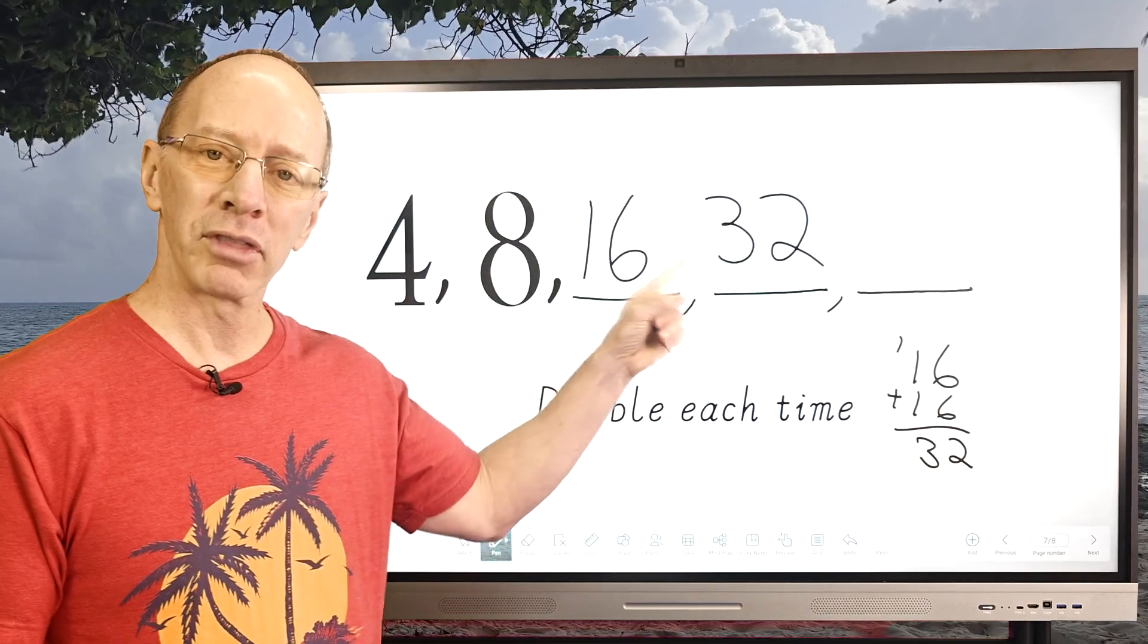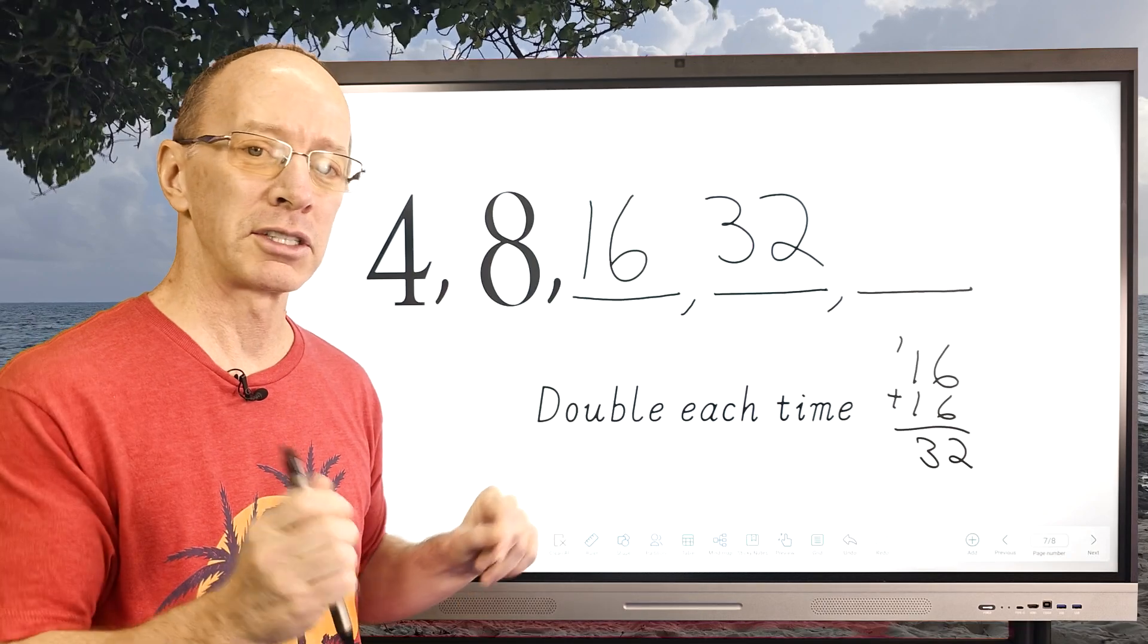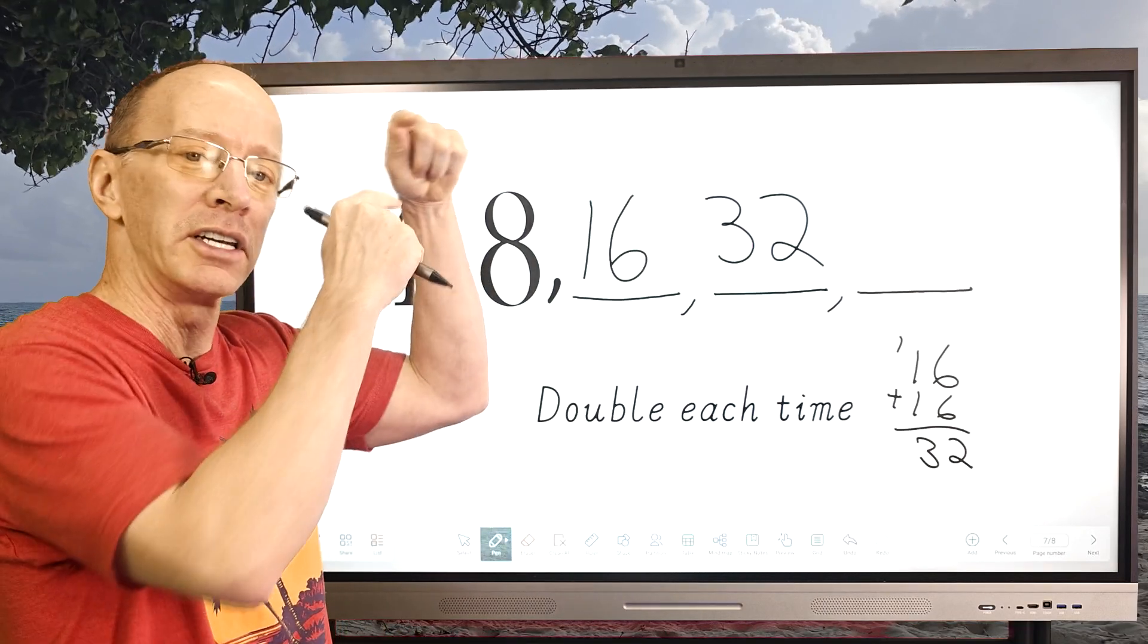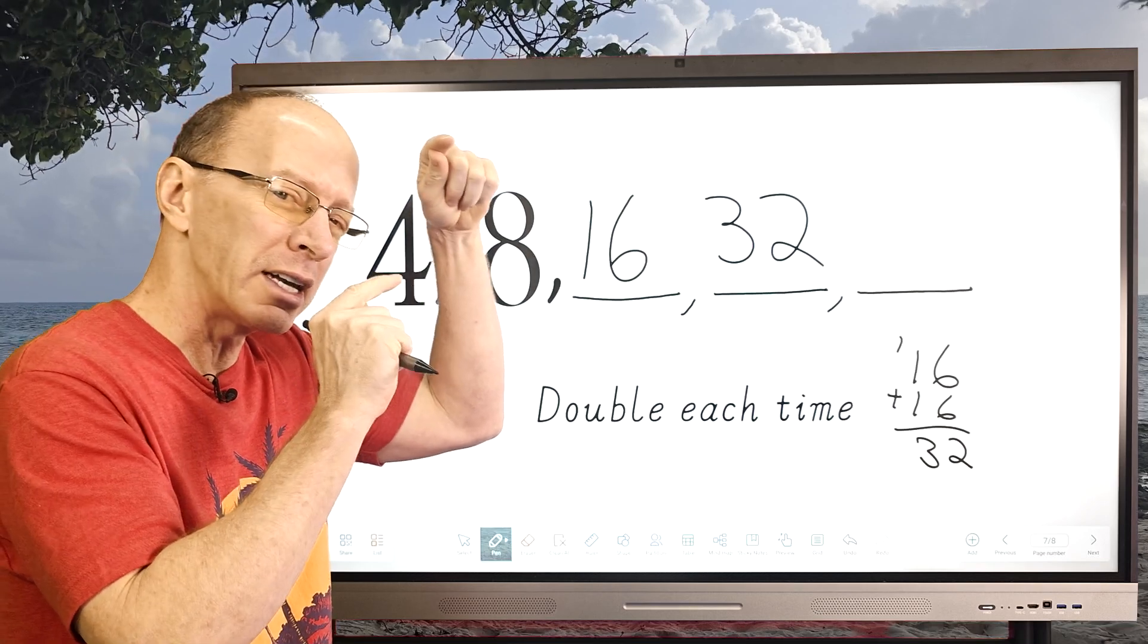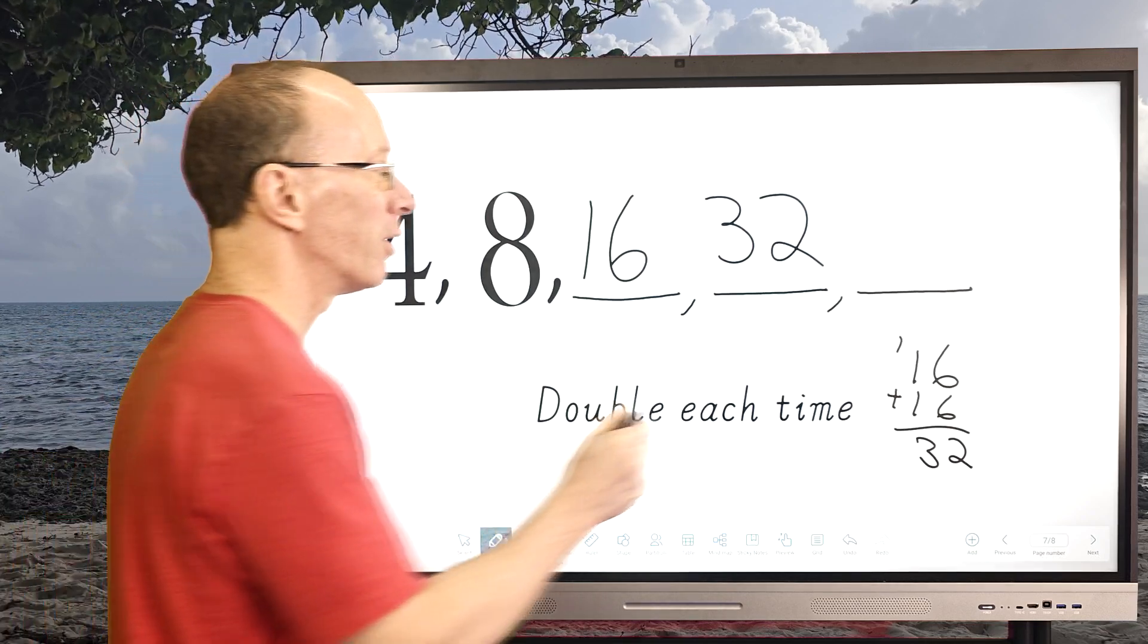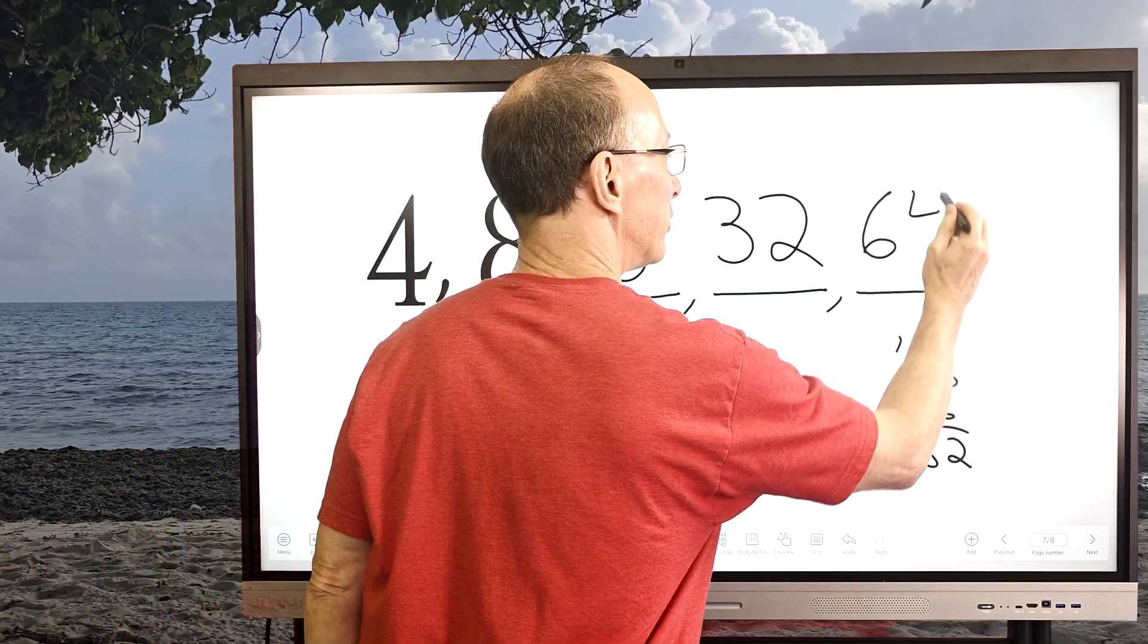So can you double this number here? Thirty-two plus thirty-two. Try to do it in your mind. You get thirty-two up here plus another thirty-two. Can you do that? Boom. What'd you get? Did you get sixty-four? Yeah. Here we go. Sixty-four.